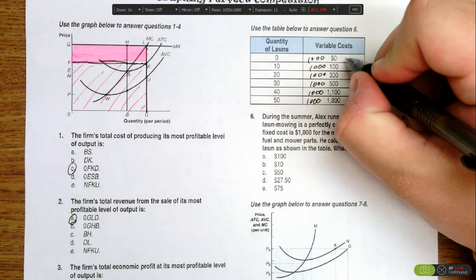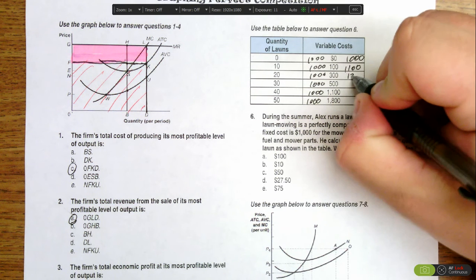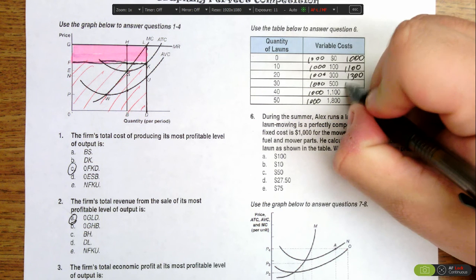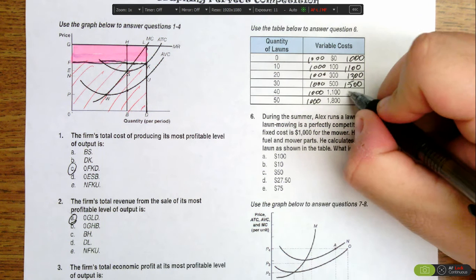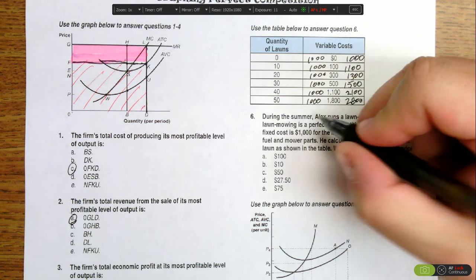So our total costs are $1,000 for zero lawns, $1,100 for 10, $1,300 for 20 lawns, $1,500 for 30 lawns, $2,100 for 40 lawns, and $2,800 for 50 lawns.